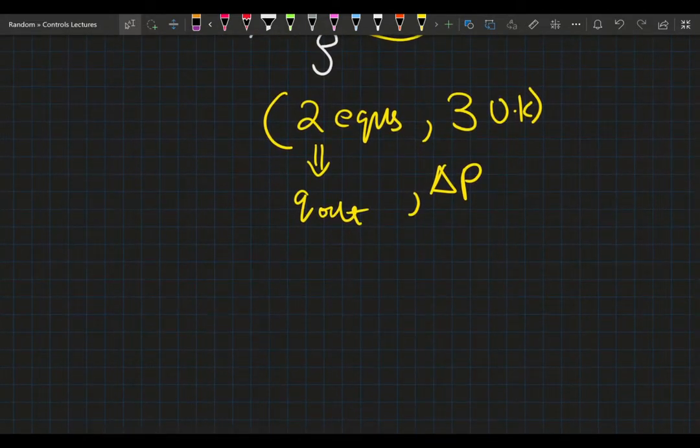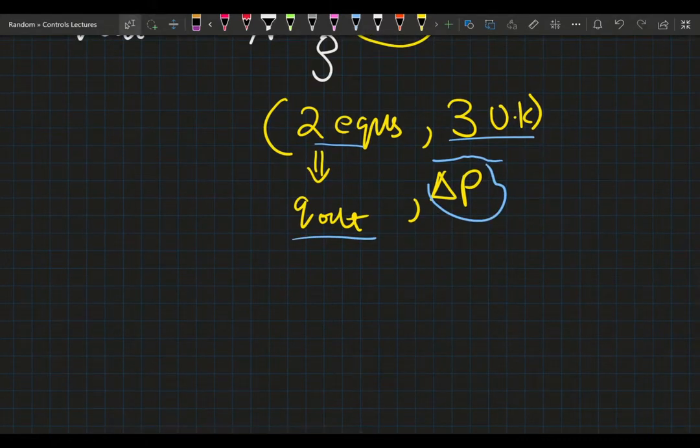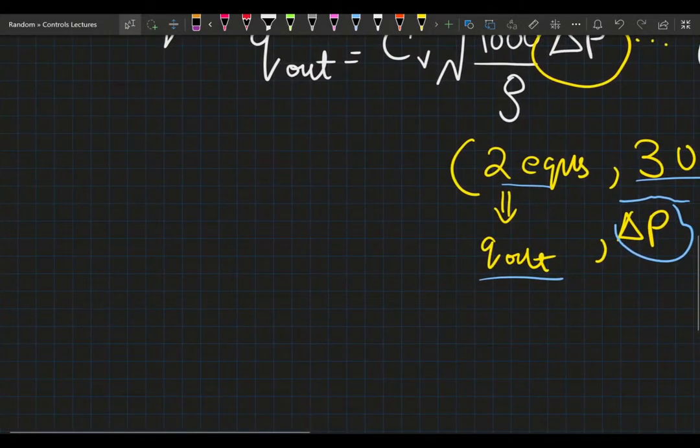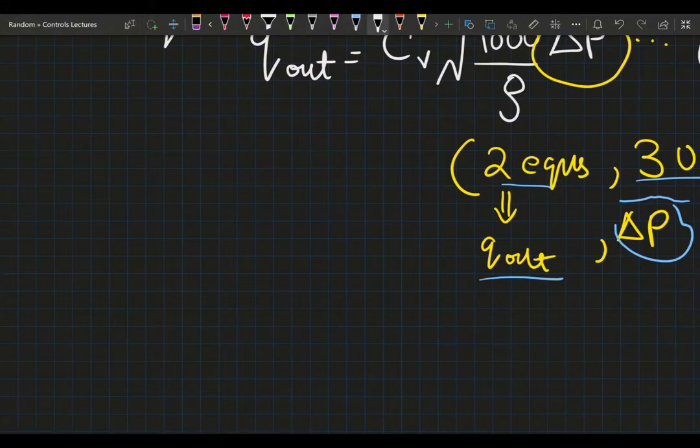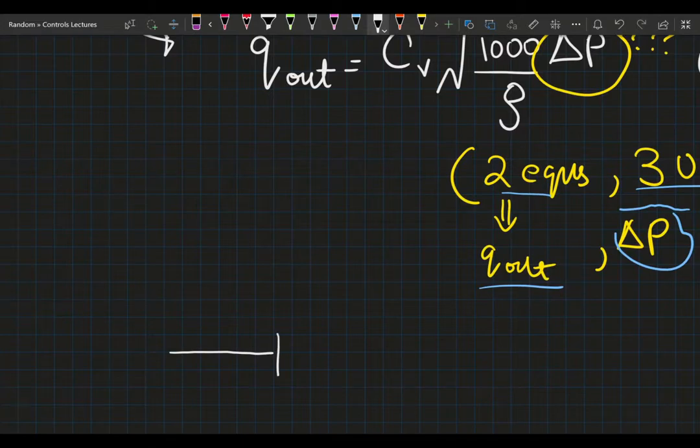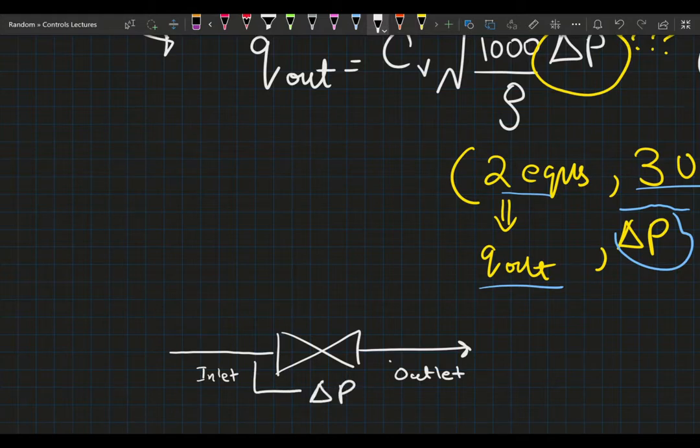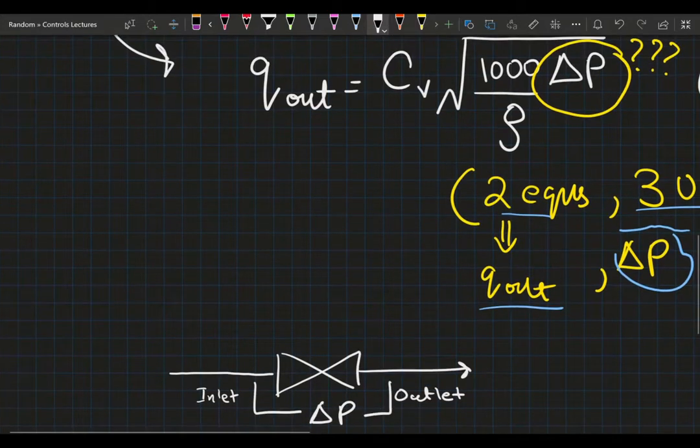Okay, so far we have two equations but three unknowns. Right now we have our equation for the outlet flow rate. The next equation we need is for the change in pressure. We are talking about the change in pressure at the inlet of the valve and the outlet of the valve. That's the delta P that we require. This is the change in pressure that we are looking for.